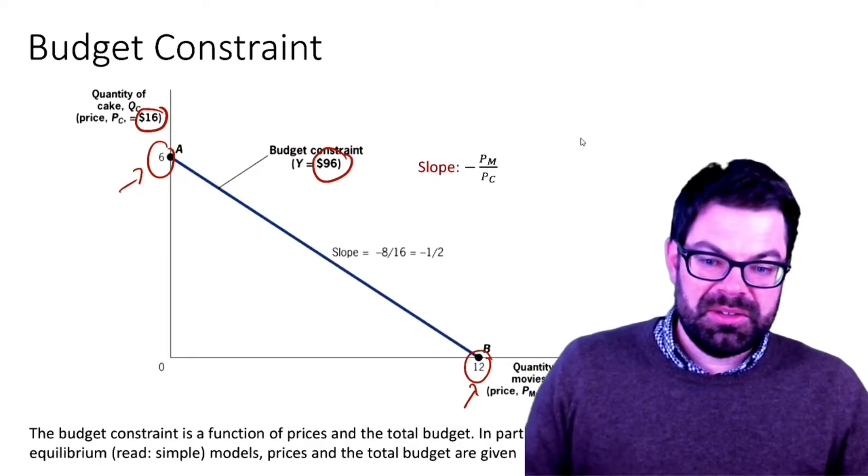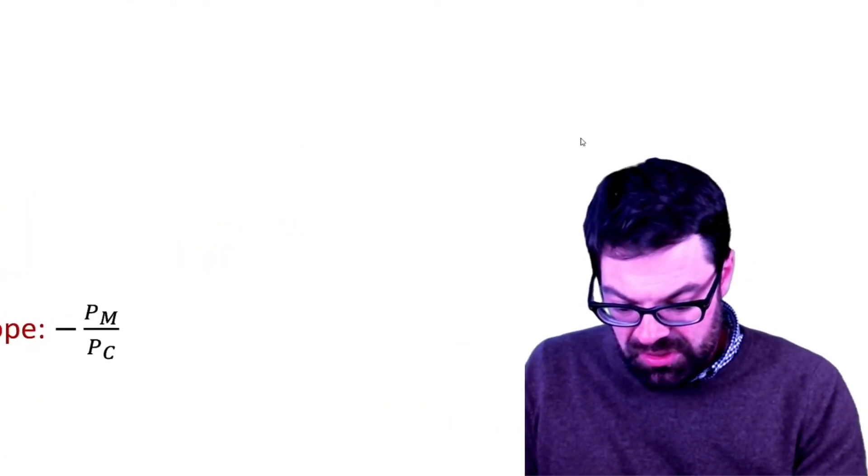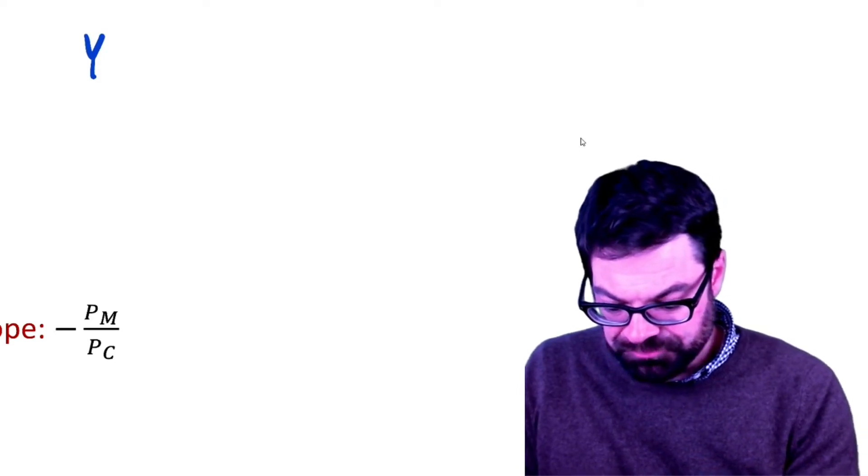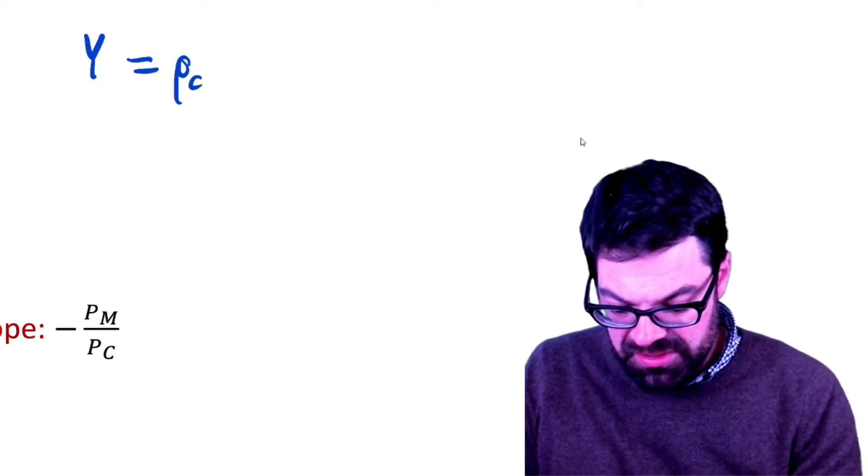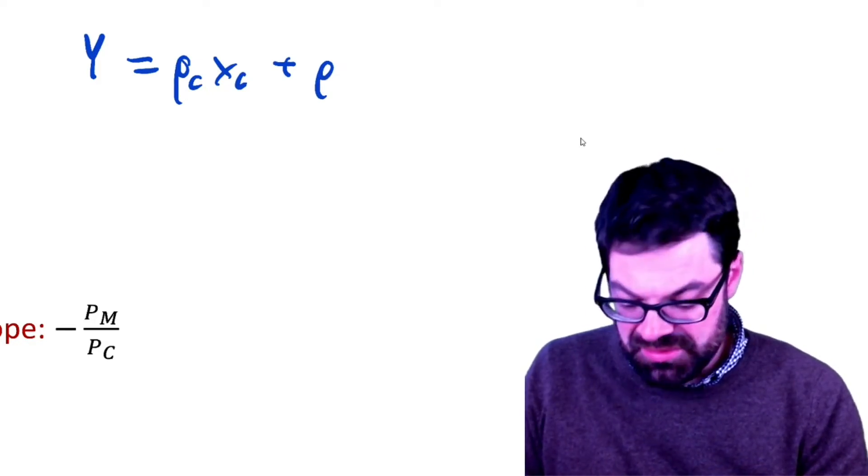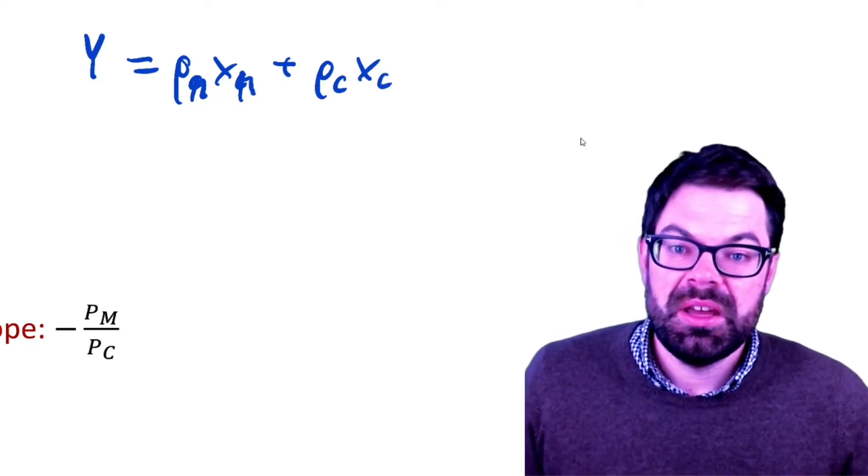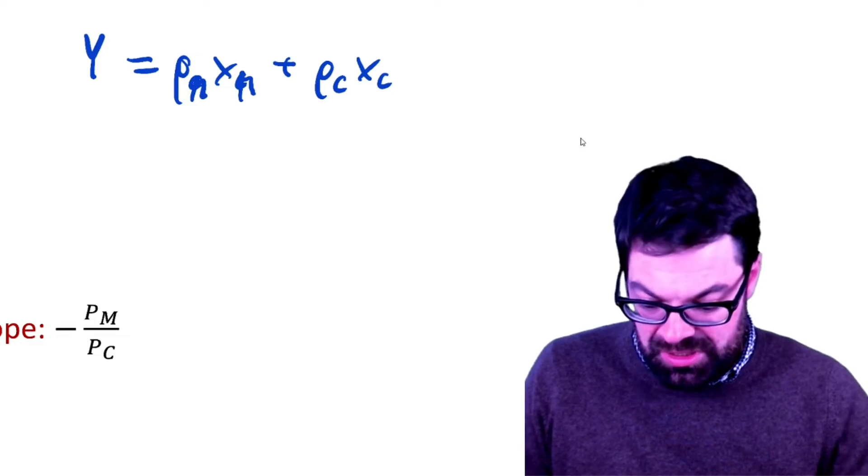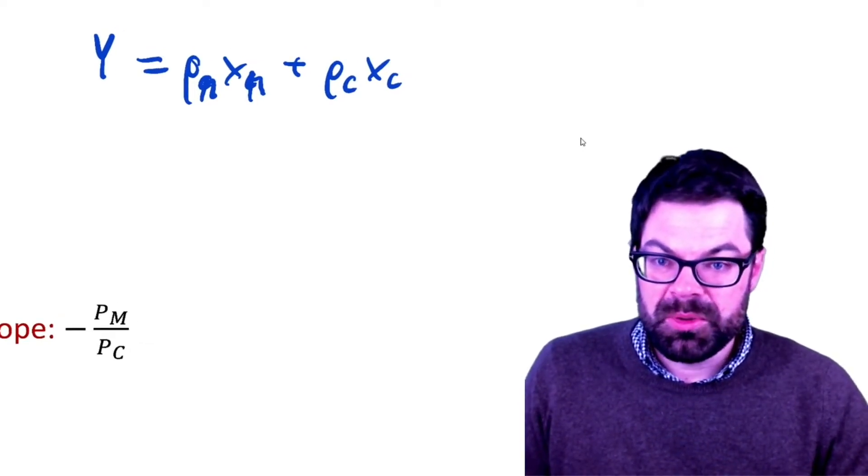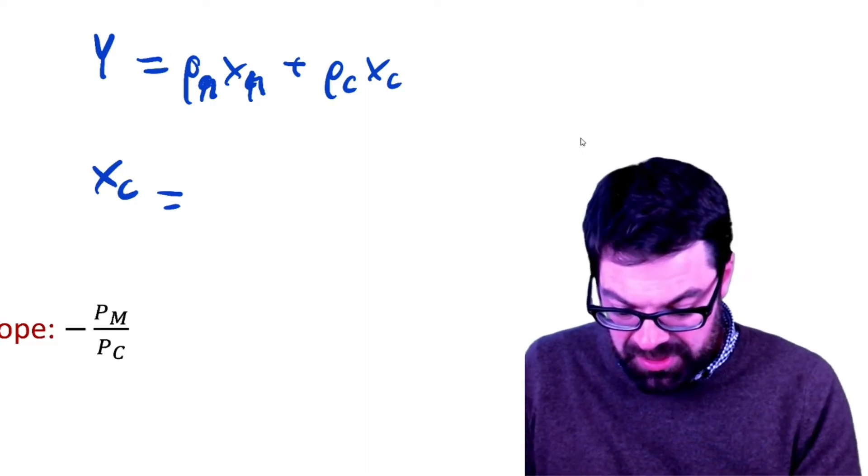We can talk about how this budget constraint is derived. It's actually very simple. You would start with a budget, let's call this Y, which equals the price for movie tickets times the quantity of movie tickets plus the price for cakes times the number of cakes the person consumes. To get that curve we would solve for xc.